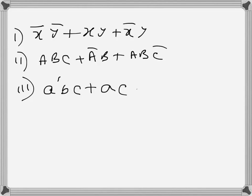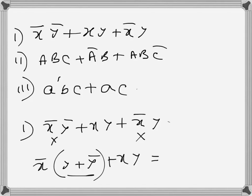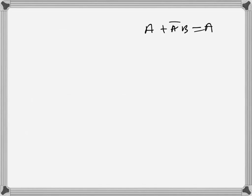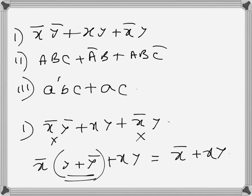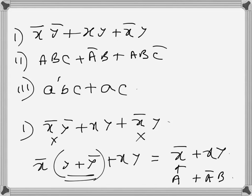For problem one, simplify x y plus x̄ y. From these two terms I can take x̄ common, so it becomes x̄(y plus ȳ) plus x y, and since y plus ȳ equals one, this reduces to x̄ plus x y. Now using the Boolean identity a plus ā·b equals a plus b, where a is x̄ and b is y, this simplifies to x̄ plus y.